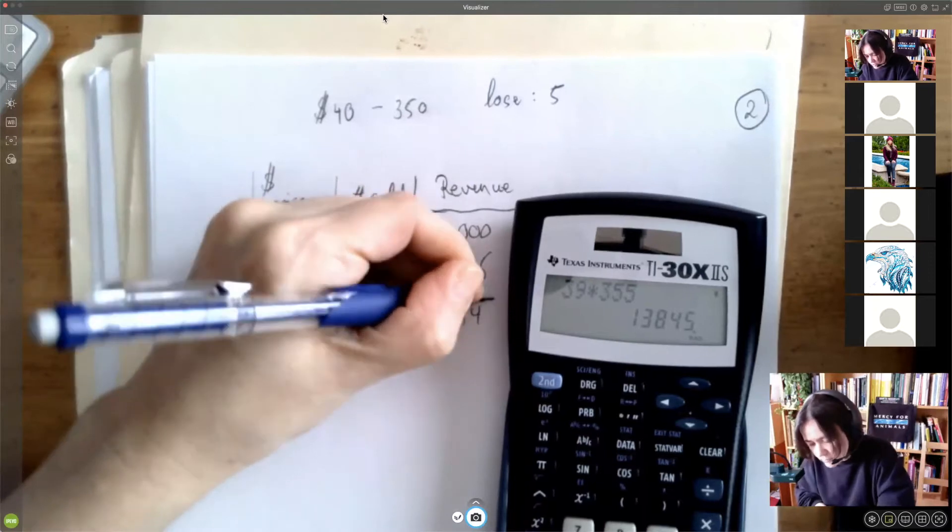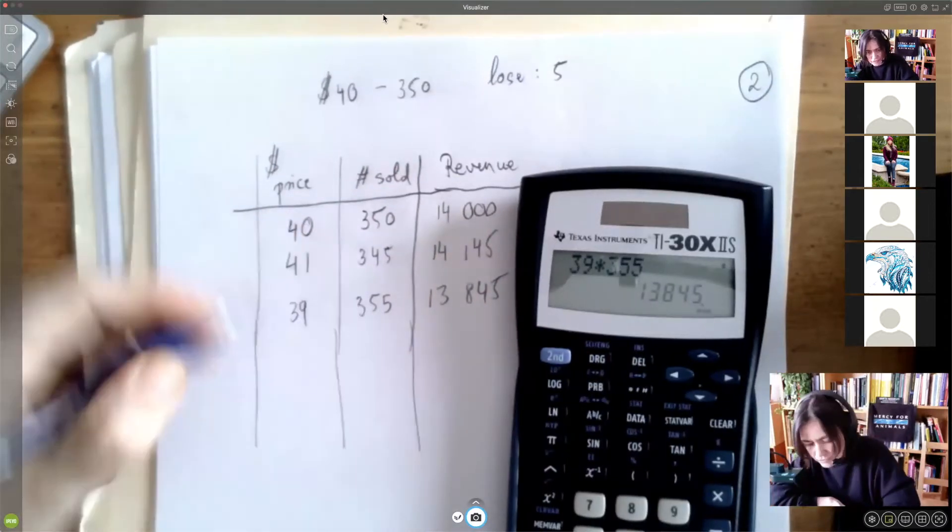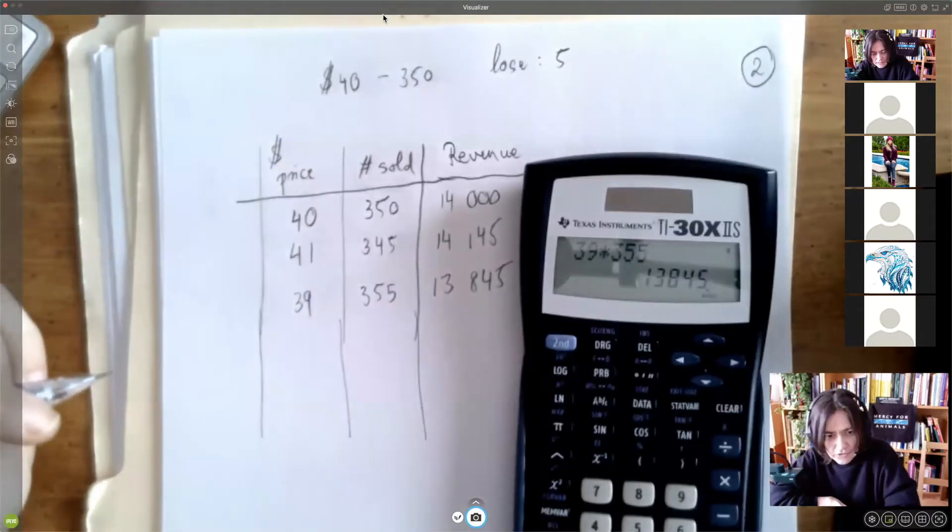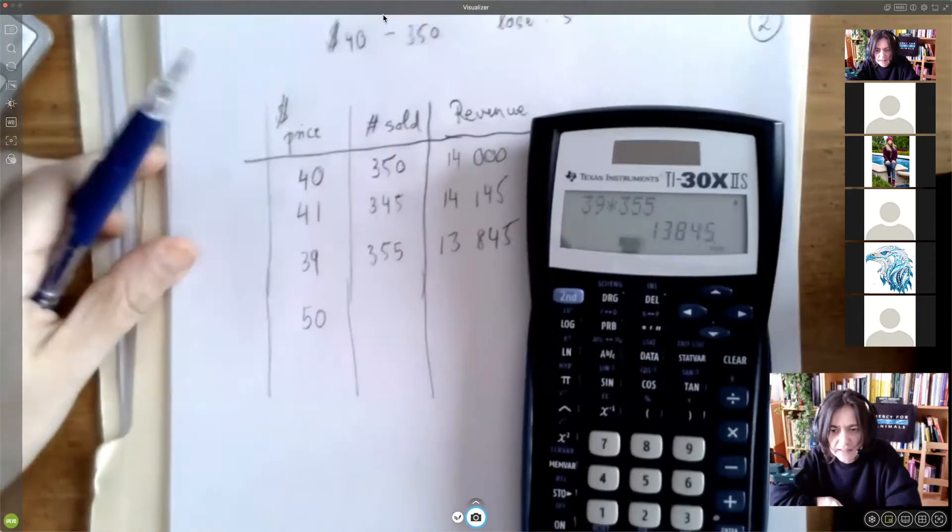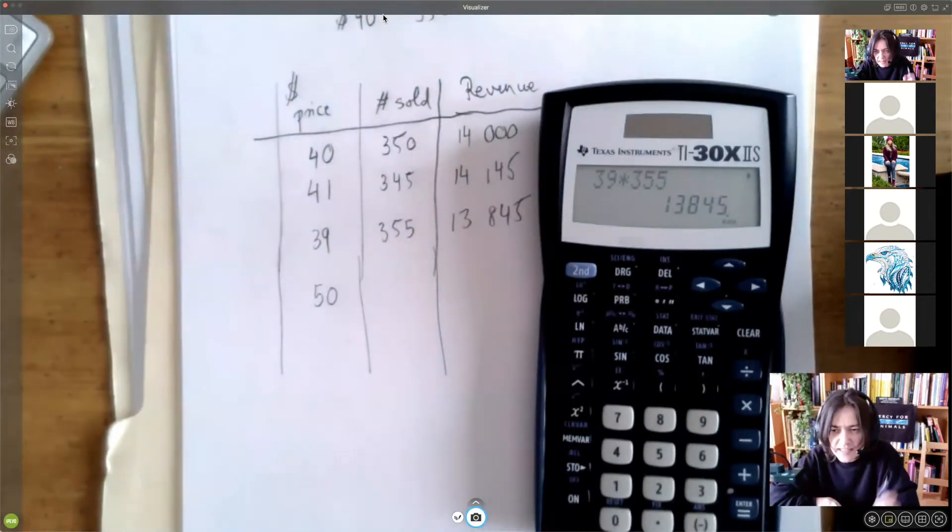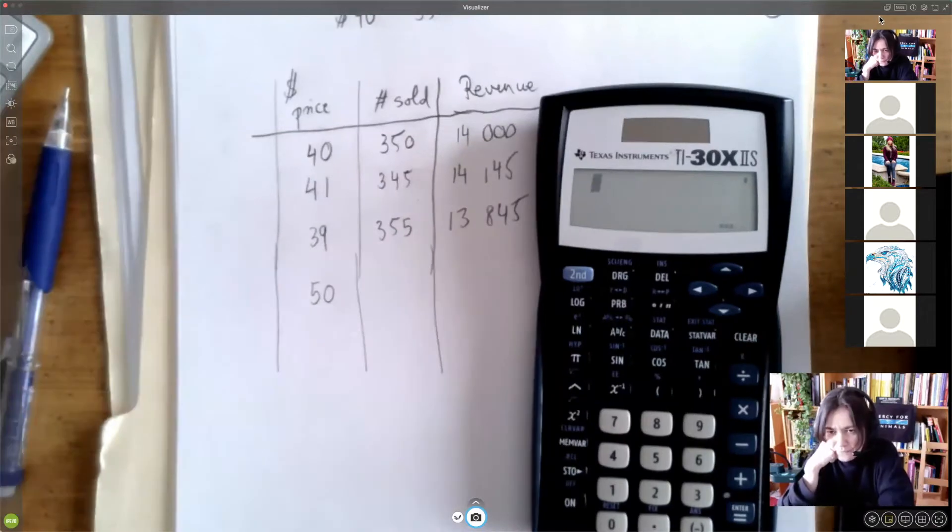So the first question was getting you to get used to this scenario. And the first question was, what about the price of 50? How much money are we clearing if we set the price of the ticket at 50 bucks? So we're going to add to 350, we're going to add 20. So it's going to be 50 multiplied by 370.